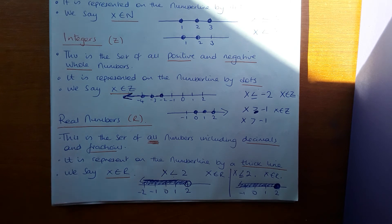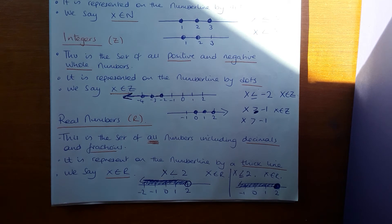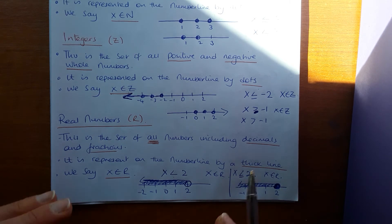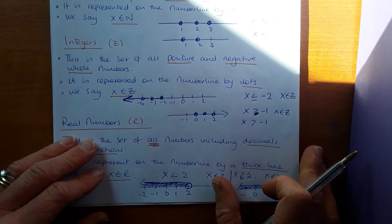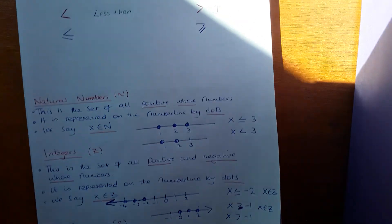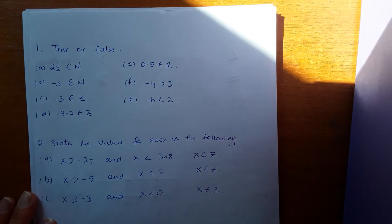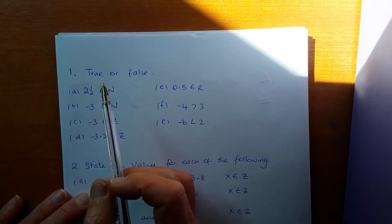If it said x less than or equal to two for real numbers, it could be equal to two so I shade in the circle. If it's equal, you shade the circle; if not, you leave it open. So: natural numbers — positive whole numbers, dots on number line, use N. Integers — positive and negative whole numbers, dots on number line, use Z. Real numbers — all numbers including decimals and fractions, thick line on number line.